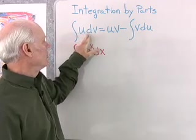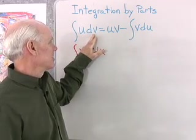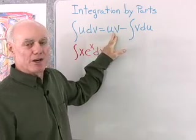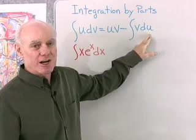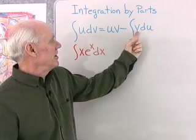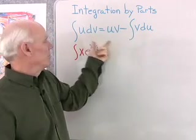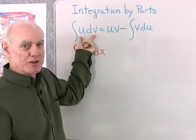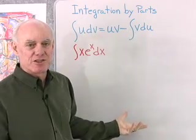If I have the integral of u dv, where u and v are functions of x, then I can always rewrite that as u times v minus the integral of v times du. Here it's u dv, here it's v du, and you do this when you have something in this form that seems difficult to integrate — you try to switch the two things and see if that's easier to integrate.